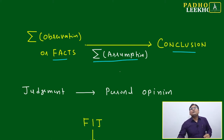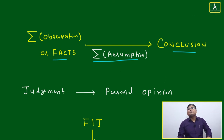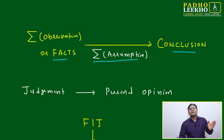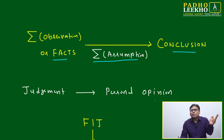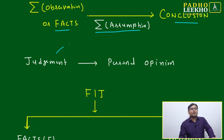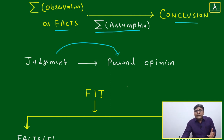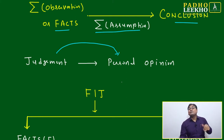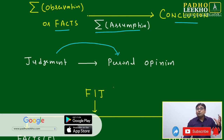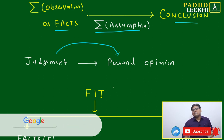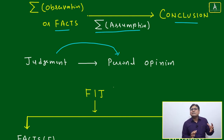In this chapter, FIJ, identification alone is sufficient — you only need to identify which statement is a fact, which is inference, and which is judgment. Based on certain rules or cheat codes, you will be able to solve questions. For example, four statements may be given, and you have to identify each as F, I, or J and match the correct order.